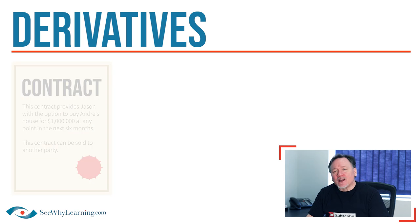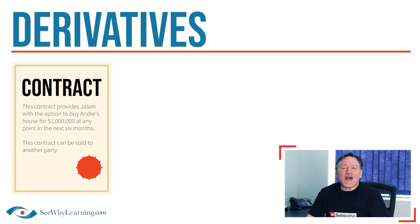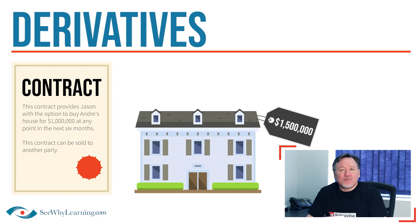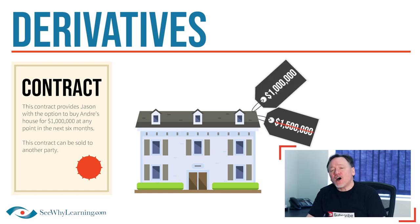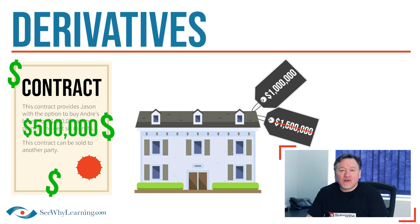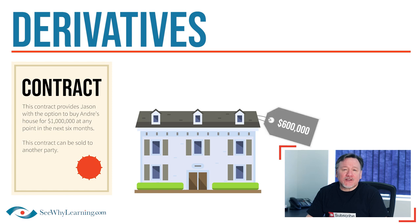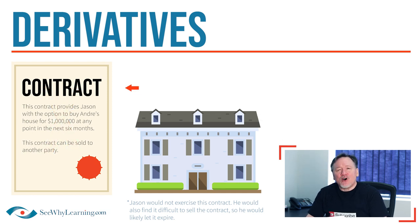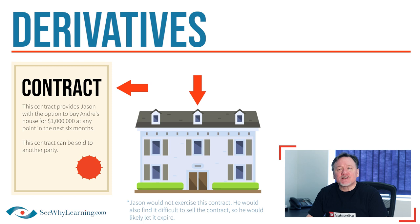To understand the value of this contract, we would really need to know what the house is actually worth right now. For example, if it's worth $1.5 million and I have the option to buy it for only $1 million, then this contract is extremely valuable to me — to the tune of $200,000 to $500,000. On the other hand, if the house is only worth $600,000, this contract is pretty much worthless to me and I'll probably just let it expire. So as you can see, the value of this contract is based upon — or as we like to say — derived from the value of the underlying asset; in this case, the house.